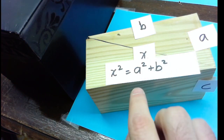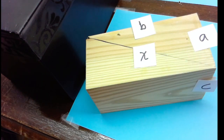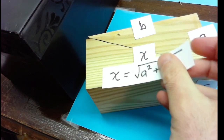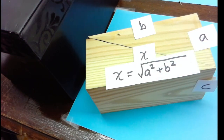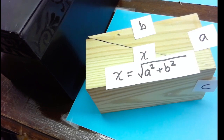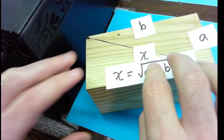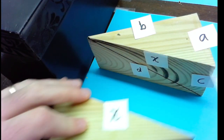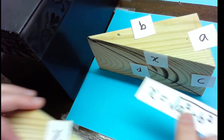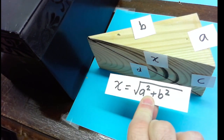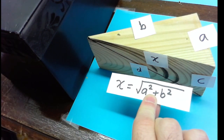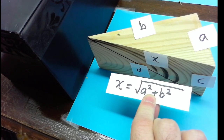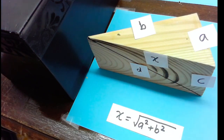So x squared equals a squared plus b squared, and we can solve for x saying that x equals the square root of a squared plus b squared. Now we've actually solved for x, so we know how long that diagonal of the top face is. Remember, we really wanted to know how long x was inside the box, and we used the top face to solve for it.